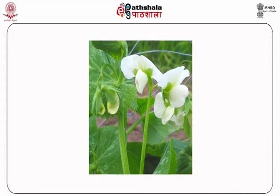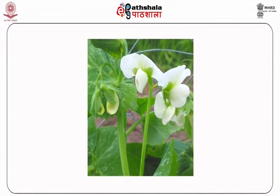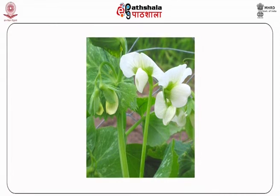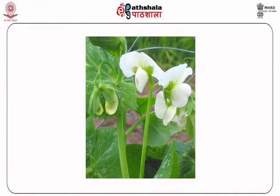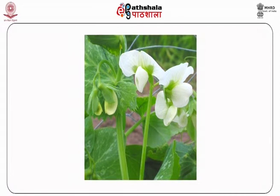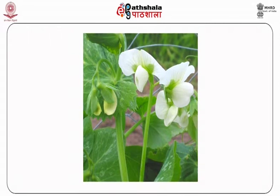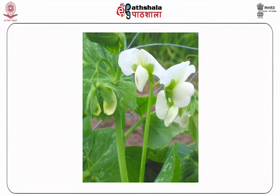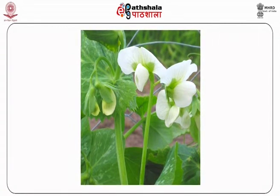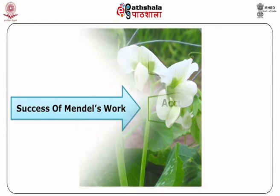Mendel's experimental approach. Mendel's research was with the pea plant, Pisum sativum, which began in 1856 in his own monastery garden.